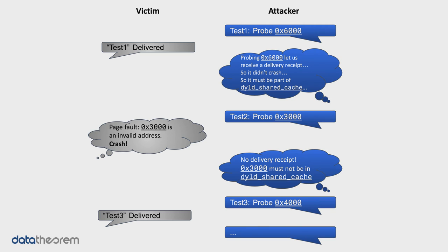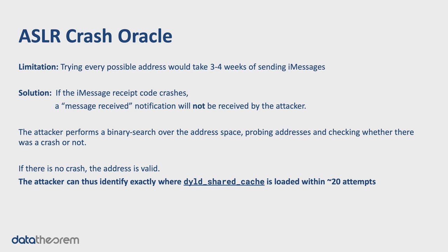Now they can refine their search and choose another address. In this case, the victim's device receives it and tries to write to it, but this time it's not a valid address, so the process is killed by the operating system. Since it was killed, the victim's device never gets a chance to send a delivery receipt. The attacker sent the message and nothing came back. After a certain timeout, the attacker concludes: I tried to write to that address and never received a delivery receipt, so the iMessage process must have crashed — meaning that address is not in the shared cache. The attacker goes back and forth like this, picking addresses and narrowing down exactly where the shared cache has been loaded very quickly.